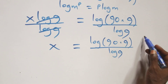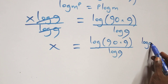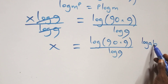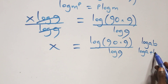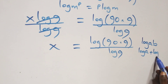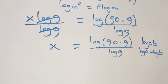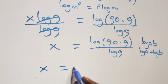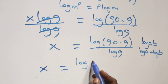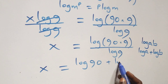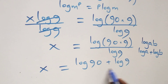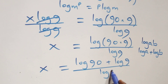This follows from the law of logarithms. When we have log a times b, this is the same as log a plus log b. So what we have here becomes x equals to log 90 plus log 9, all over log 9.